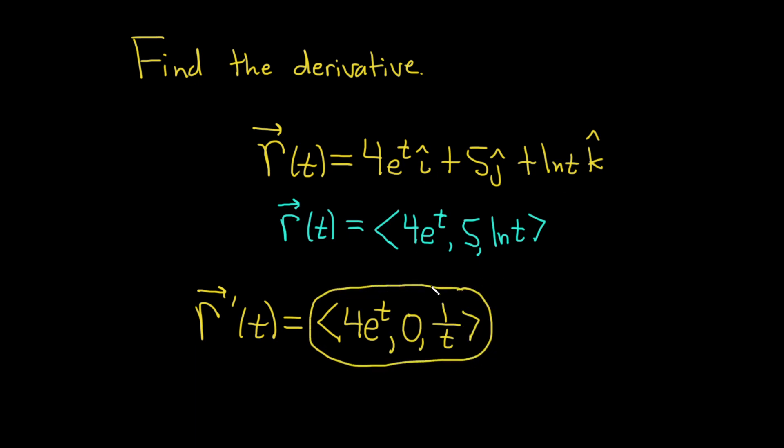Now let's suppose that you didn't write your answer this way. You wanted to write it in a different way. Well, you could write it with this i, j, k notation. You would write it as 4e to the t i-hat plus 0 j-hat. And you could omit this piece whenever it's understood. So in this case, you could just not write it.